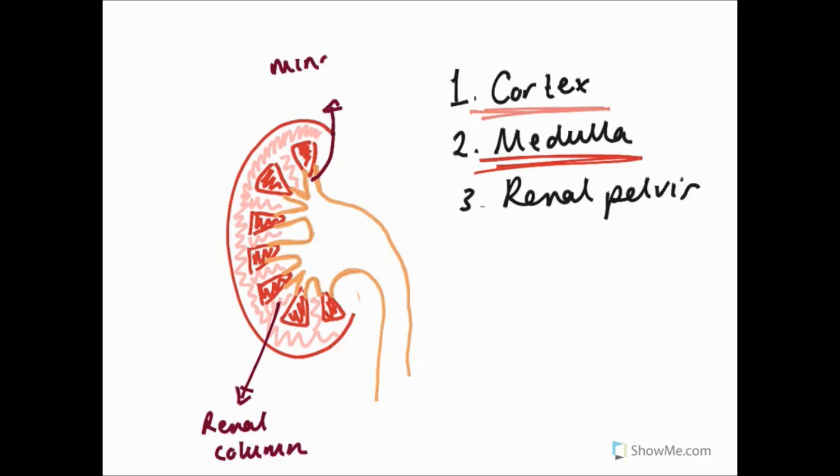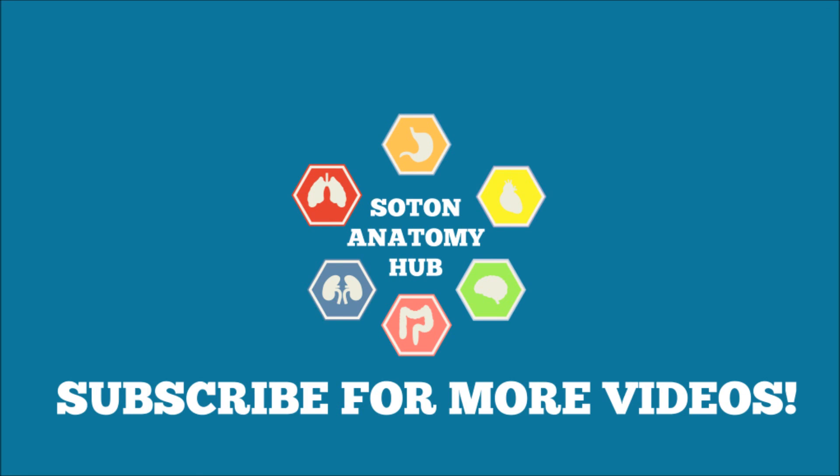So, each renal papillae opens into a cup-like minor calyx which unite to form a dilatation called the major calyx. And then the major calyxes unite to form the renal pelvis. And from here, the urine drains into the ureter and onwards towards the bladder.